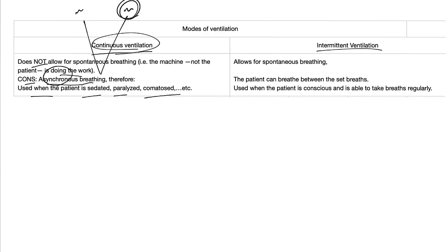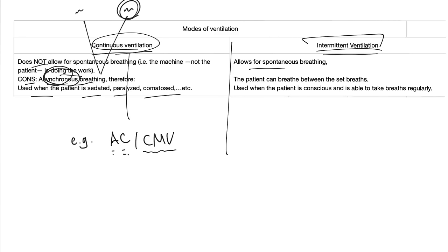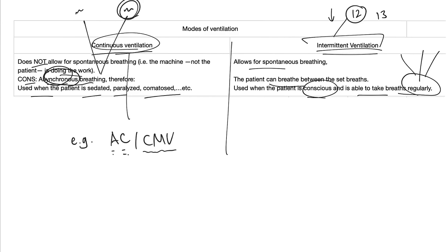One example of continuous ventilation is AC-CMV — assist control or controlled mechanical ventilation. Next, we have intermittent ventilation, which allows for spontaneous breathing. The patient can trigger it whenever he wishes. If you set the ventilator at 12 breaths per minute and the patient wants to breathe in between to make it 13, no problem — but it will never drop below 12, because that would be dangerous. We usually use this if the patient is conscious and able to take breaths regularly.